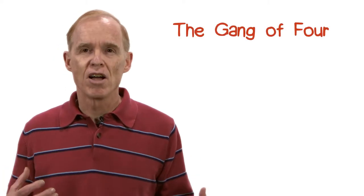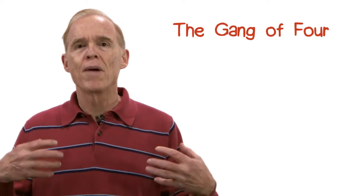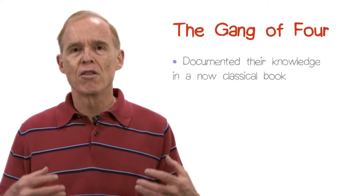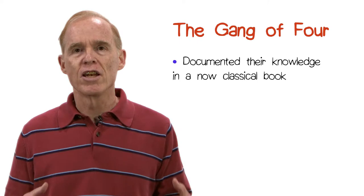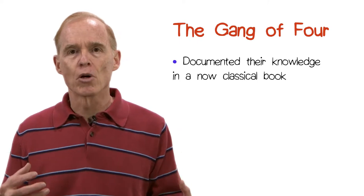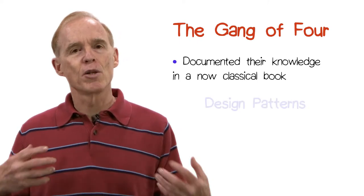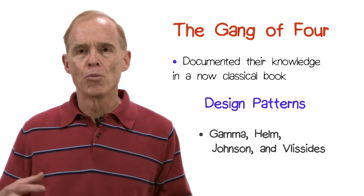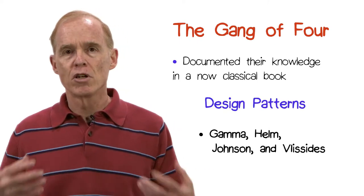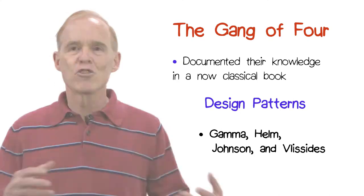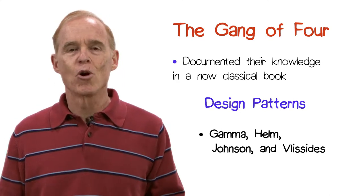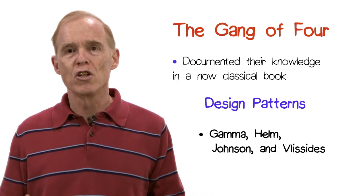In 1995, four master software designers documented their knowledge in a now classical book called Design Patterns. They were Gamma, Helms, Johnson, and Vlacidides. Because of the number of the authors, this book is sometimes called the Gang of Four book, or simply GOF.